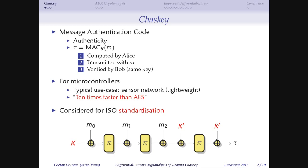The way a MAC algorithm works: you have some function that takes a key and a message and gives you a short tag as output, and then you send the tag together with the message. The recipient can recompute the tag with its own copy of the key and verify that the tag is correct. In the case of Chaskey, it's a MAC algorithm optimized for microcontrollers — a lightweight design — and one of the main design goals was to be 10 times faster than AES on microcontrollers. It's also under consideration for standardization by ISO, so it makes sense to study its security.